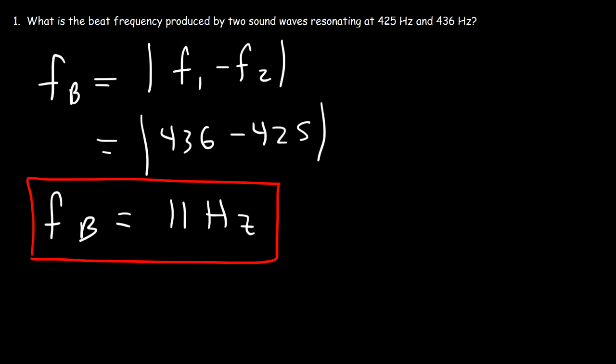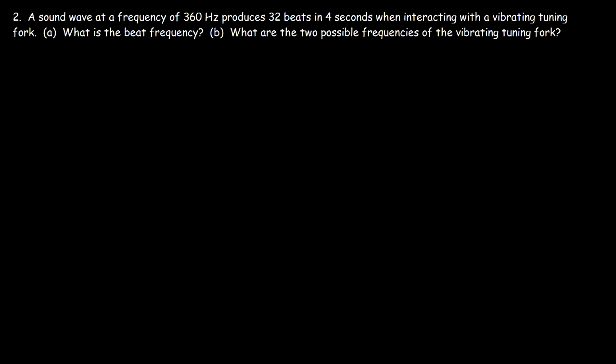Here's the second problem: a sound wave at a frequency of 360 Hertz produces 32 beats in 4 seconds when interacting with a vibrating tuning fork. What is the beat frequency? Frequency is defined as the number of cycles that occur per second, so if you take the cycles and divide it by the time, you can get the frequency.